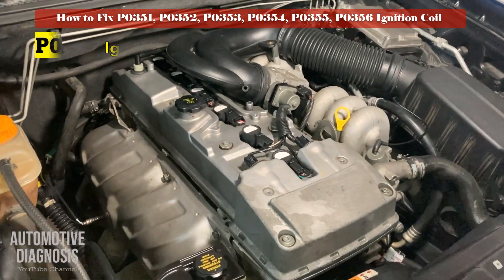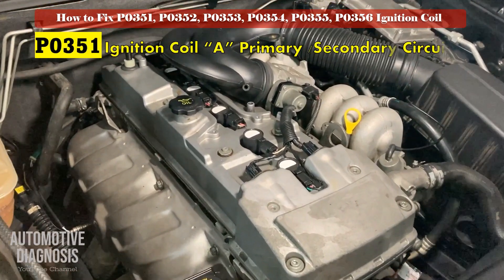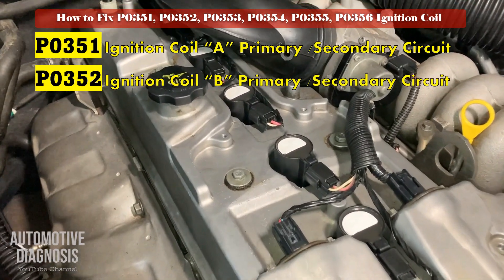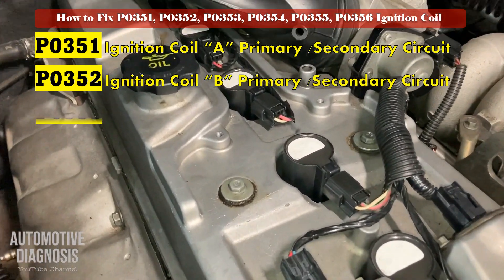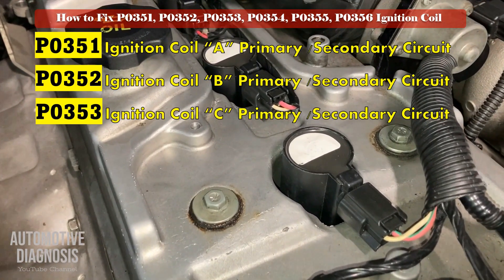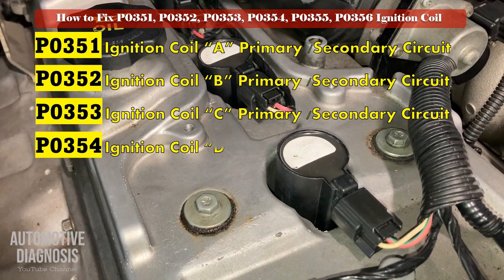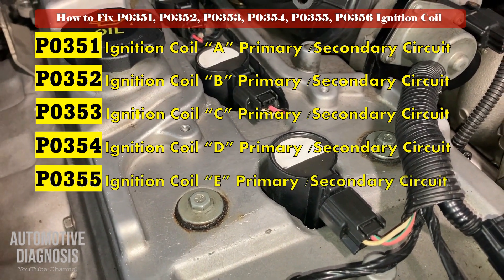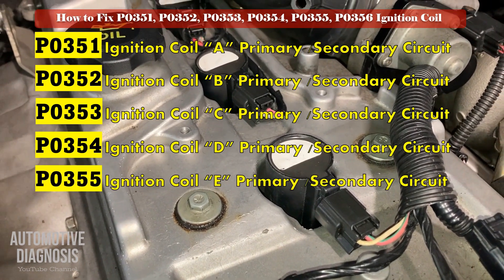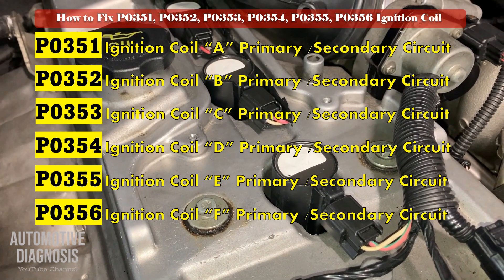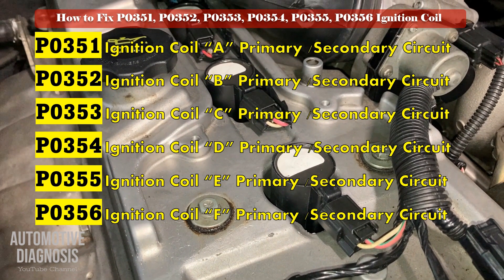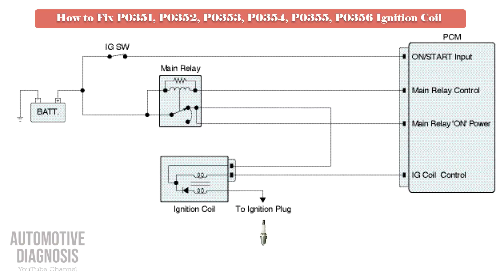The ECM checks ignition coil operation every 10 seconds, and if signals indicate an open or short circuit, the ECM will set a fault code and the engine warning lamp will turn on. There is a specific fault code for each ignition coil, so considering the fault code you have, perform the following diagnostic procedure for that ignition coil.